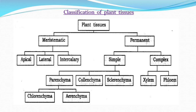Permanent tissues are also plant tissues. When the meristematic tissue attains maturity, it gradually changes into permanent tissue. So permanent tissues are plant tissues derived from meristematic tissue. The meristematic tissue is further classified into apical meristems, lateral meristems, and intercalary meristems. The permanent tissues will be discussed in the next class.